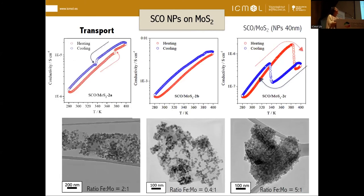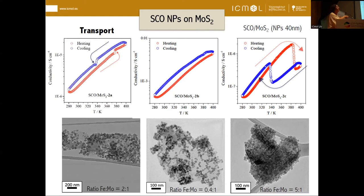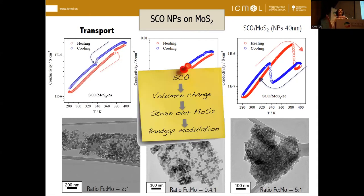We have measured different composites with nanoparticles in different ratios. When the nanoparticles are smaller, the effect is smaller but still observable. However, if we have too many nanoparticles, what we measure is only the behavior of the nanoparticles — the reverse behavior — because transport goes through the nanoparticles. If we have too few nanoparticles, we don't observe an effect of the spin transition in the transport measurements. It seems that with the spin crossover, the volume changes affect the band gap of our molybdenum disulfide because they affect the transport properties.